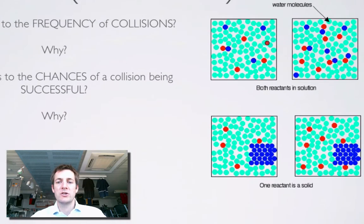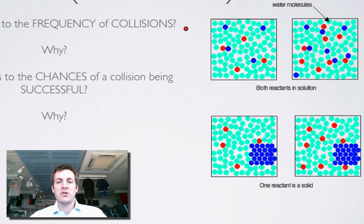Let's look at what happens when we change the concentration of a substance. Here are two reactants — one red, one blue — in a solution with turquoise dots representing solvent or water molecules. In one box we have a solution of low concentration, and in the other a higher concentration. Hopefully it's obvious that particles in the higher concentration will collide more often because there are simply more of them in the same space.